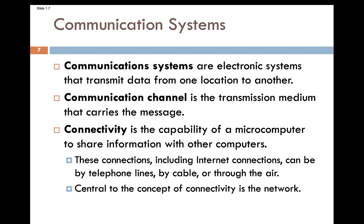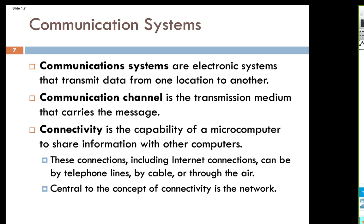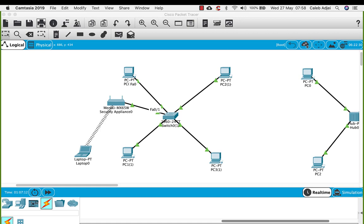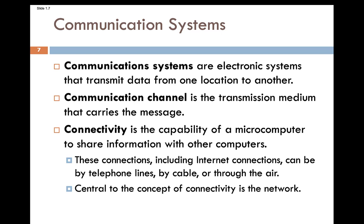Communication systems refer to the electronic systems that transmit data from one location to another — your computers and phones connected to a network that can send information from one location to another. In our simple network diagram, we have various computer devices connected together. These are the communication systems on the network.